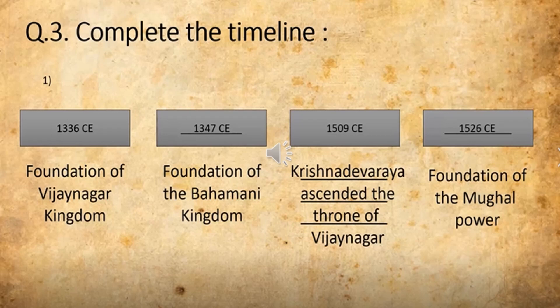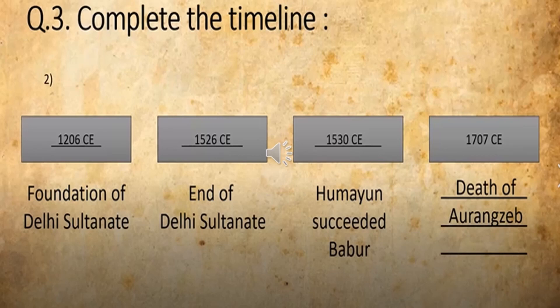You have to remember the year and then only you can click at the right option and get your marks. In this way the questions will be asked. Now we will move on to the second timeline. In the second one, complete the timeline: the first is Foundation of the Delhi Sultanate and you had to write the year.